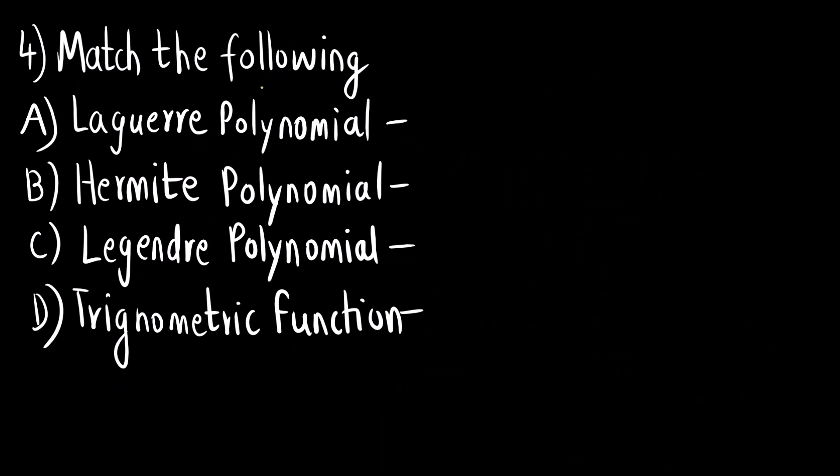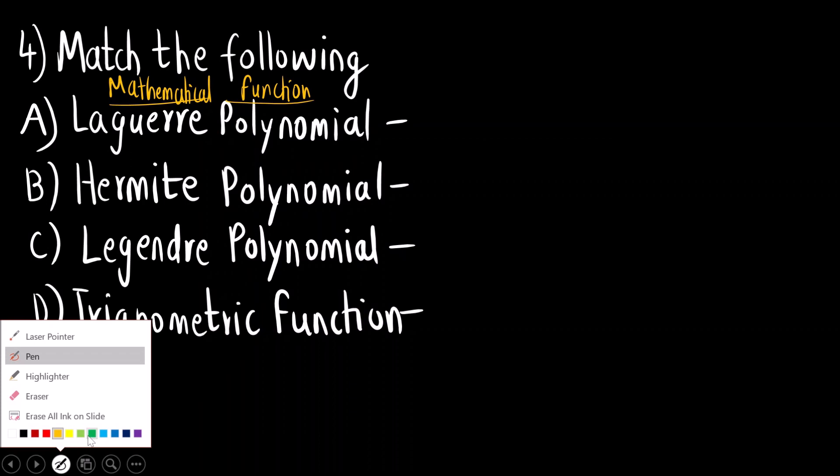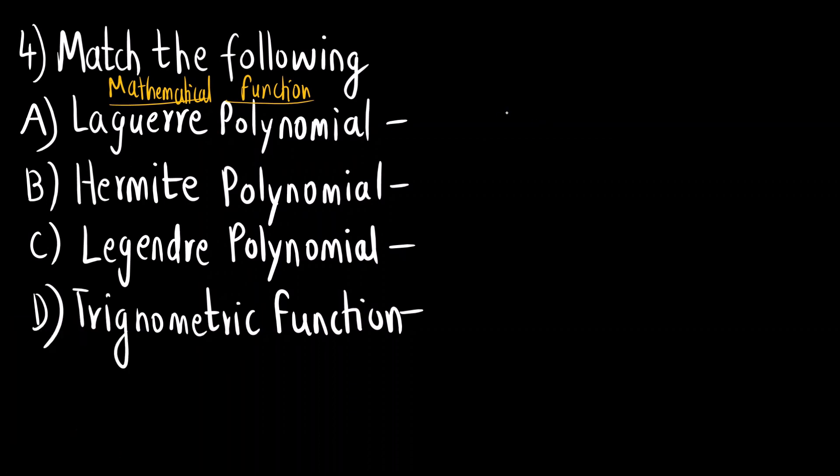Now this is a match the following question. These are the mathematical functions that are used in quantum for different systems. This was a very straightforward question if you know the answer, if you have studied in depth then only you can answer this question or else you could have skipped this question. So Laguerre polynomial is used to solve the radial part of the hydrogen atom.